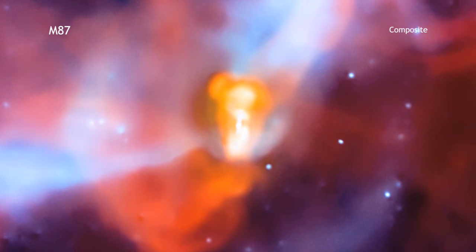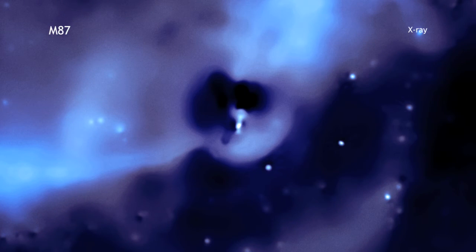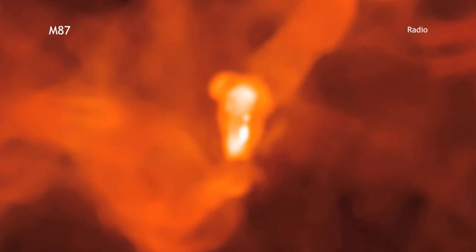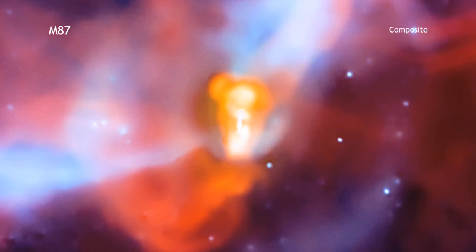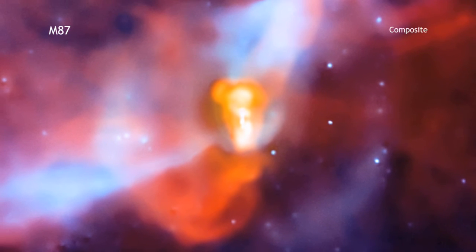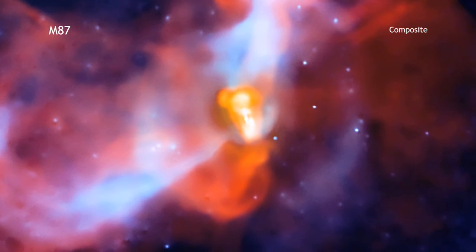This composite image from NASA's Chandra X-ray Observatory, with radio data from the Very Large Array, shows a cosmic volcano being driven by a black hole in the center of the M87 galaxy.